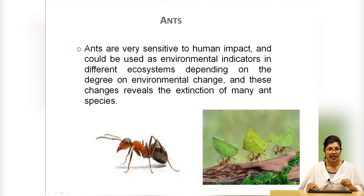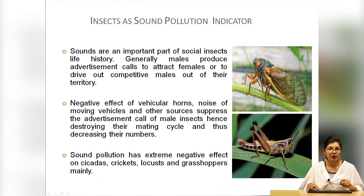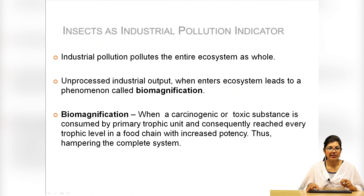Some insects also act as light pollution indicators, including butterflies. Some insects act as sound pollution indicators — these include cicadas, crickets, locusts and grasshoppers. Some insects act as industrial pollution indicators and some act as air pollution indicators.